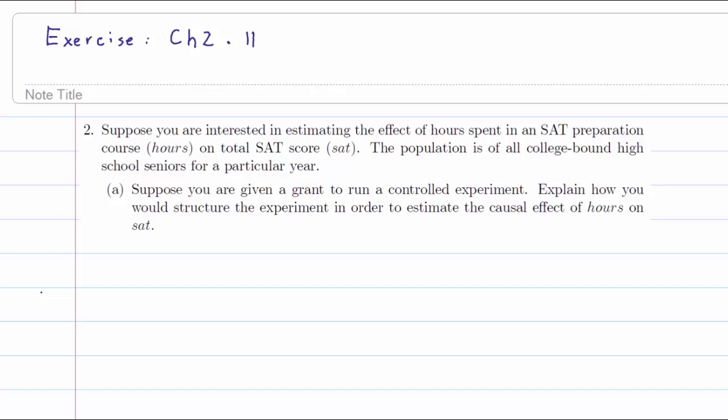In this video we are going to cover exercise number 11 in chapter 2. The question goes as follows: Suppose you are interested in estimating the effect of hours spent in an SAT preparation course (the variable is hours) on total SAT score (SAT). The population is all college-bound high school seniors for a particular year.